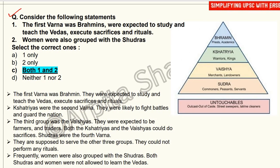A practice question: Consider the following statements — (1) Brahmins were expected to study and teach the Vedas and execute sacrifices and rituals. (2) Women were also grouped with the Shudras. Which statement is correct? Both the statements are correct. Brahmins studied the Vedas, performed rituals, and implemented them in their lives.